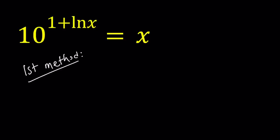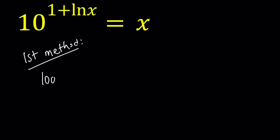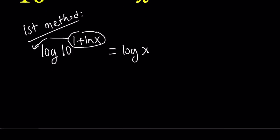For my first method I'm going to log both sides. Since we have a 10 as our base on the left hand side, it makes sense. So log both sides and then bring this down. If you bring that down, that's going to be 1 plus ln x multiplied by log 10, which is 1. So we can write it as 1 plus ln x equals log x.